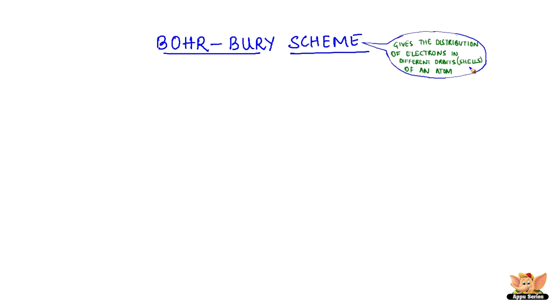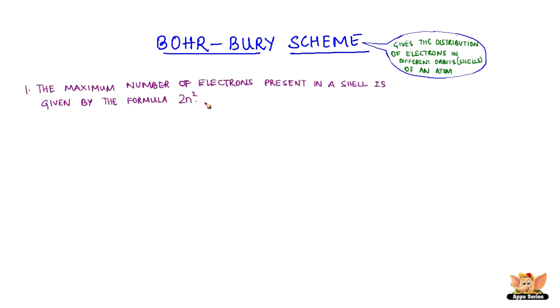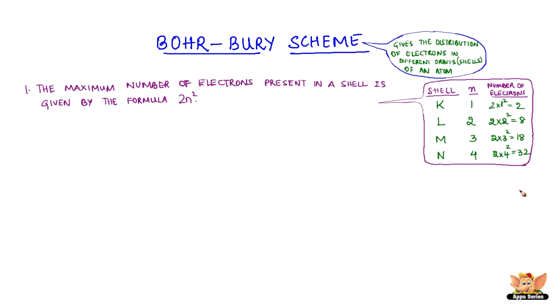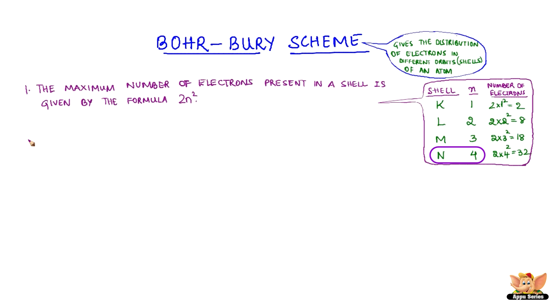The rules of this scheme are: Number 1 — the maximum number of electrons present in a shell is given by the formula 2n squared. The shell nearest to the nucleus is the K-shell, where n equals 1, so the maximum number of electrons is 2 times 1 squared, which equals 2. Similarly, for the L-shell, 2 times 2 squared equals 8. For the M-shell, 2 times 3 squared equals 18. And for the N-shell, 2 times 4 squared equals 32, and so on.